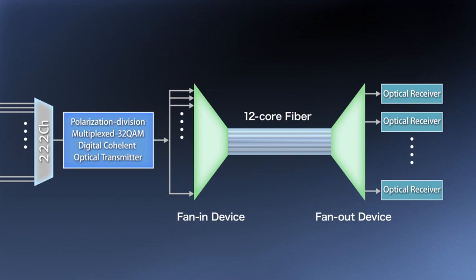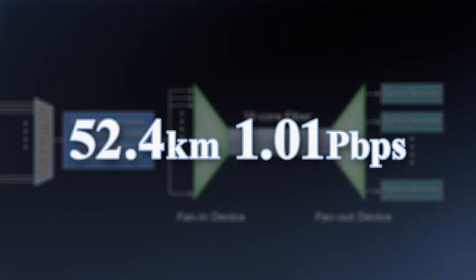This experiment achieved an optical transmission speed greater than 1 petabit per second over a distance of 52.4 kilometers, a world first. A transmission speed of 1 petabit per second corresponds to the transmission of 5,000 HDTV movies in one second.